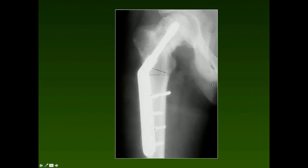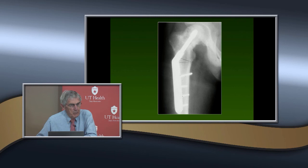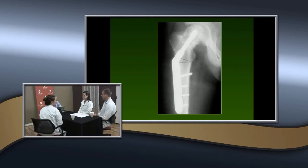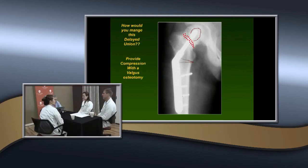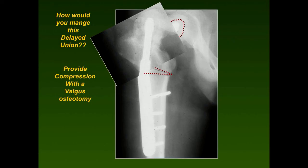For a non-union with the windshield wiper sign, the rescue procedure is a valgus osteotomy — this changes the shear force at the fracture site to a compressive force, promoting healing. Taking out a wedge and performing a valgus osteotomy increases the effective abduction range before impingement occurs in patients with AVN sequelae.